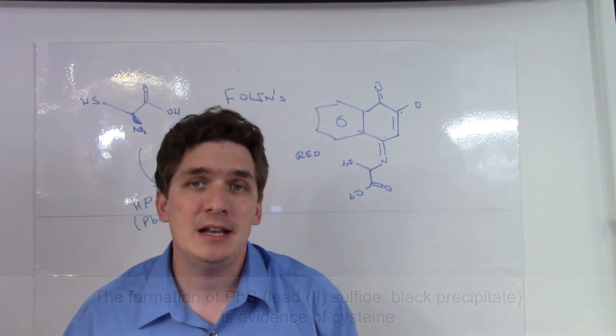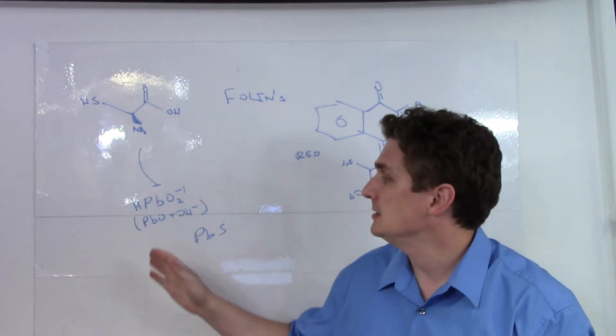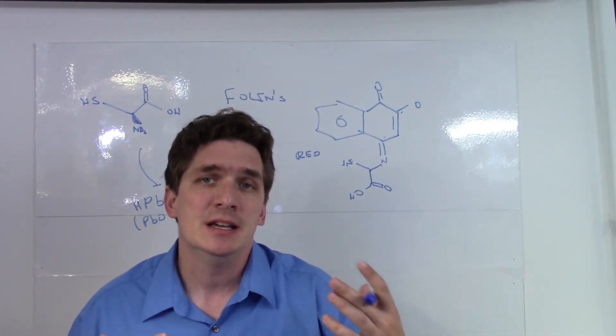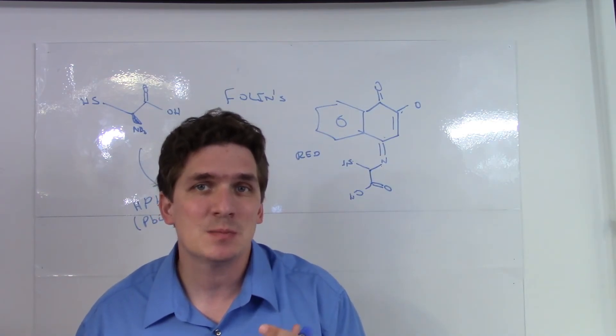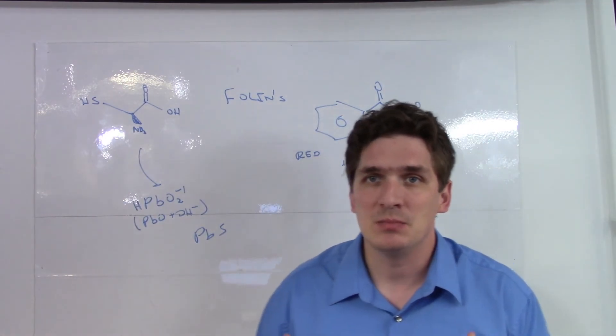So if we add plumbite, PbO2 minus 1, which we form by taking lead(II) oxide and reacting under basic conditions, if cysteine is present, it will abstract the sulfur from it and we end up getting this solid black precipitate.